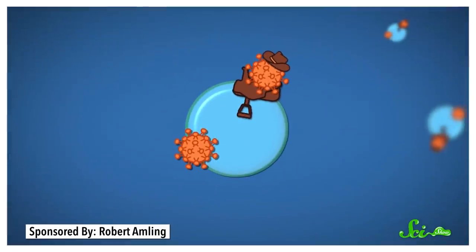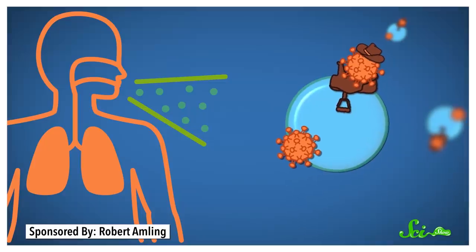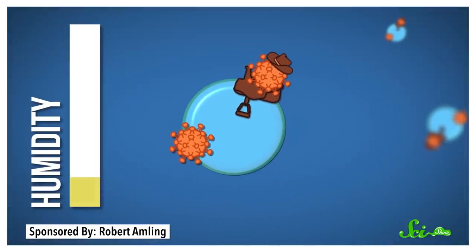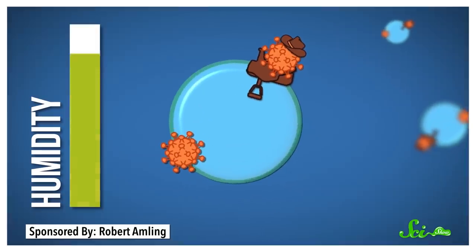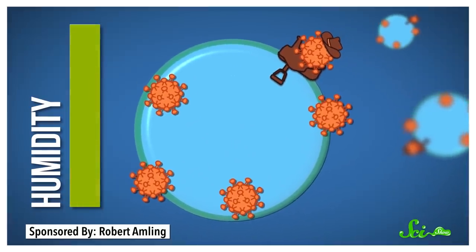We know that certain viruses, like influenza and coronaviruses, can spread by hitching a ride on the little droplets of moisture that leave your lungs when you breathe or cough—often on the outer surface of those droplets. When it's more humid, the air can support larger droplets of moisture, with more surface area for the viruses to hang out. But being at the surface of the droplets is actually bad for these viruses.